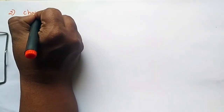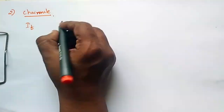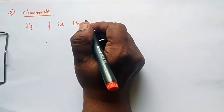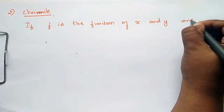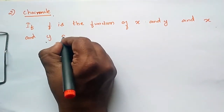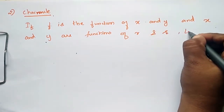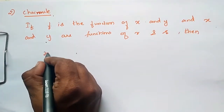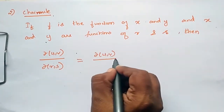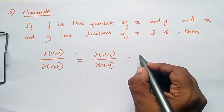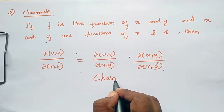Chain rule: If u and v are functions of x and y, and x and y are functions of r and s, then ∂(u,v)/∂(r,s) is equal to ∂(u,v)/∂(x,y) into ∂(x,y)/∂(r,s). So this is the chain rule.